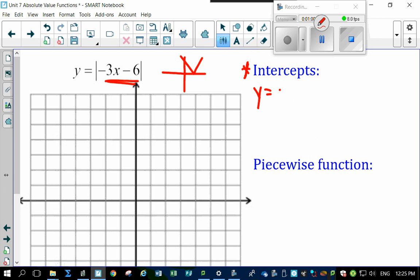Probably the easiest and most important thing to do here first off is figure out the intercepts. So here's the original graph, minus 3x minus 6.